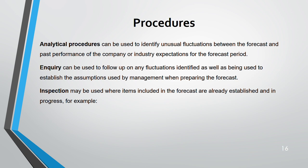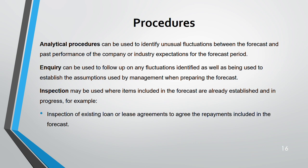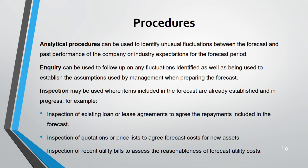For inspection, you can inspect quotations or price lists to agree forecasted costs for new assets, or inspect utility bills to assess the reasonableness of forecasted utility costs. Note that you can only inspect something that already exists. Written representations from management — similar to review — confirm the purpose of the PFI, that management assumptions are complete, and management's responsibility in preparing the PFI.